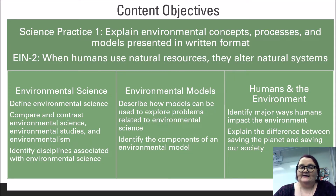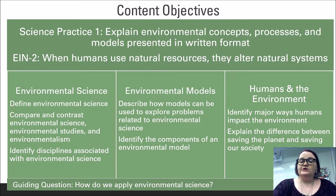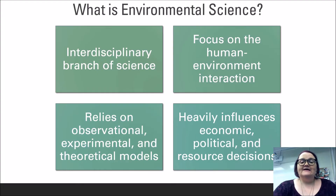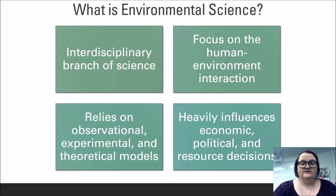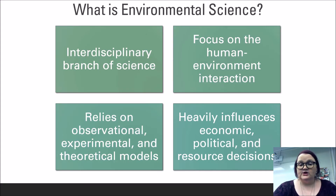You should also be able to identify components of an environmental model, identify major ways humans impact the environment, and explain the difference between saving the planet and saving our society — which leads us to the guiding question: how do we apply environmental science? Environmental science is, in simplest terms, the study of how human beings interact with and influence our world through natural and unnatural processes. It is one of the most prolific interdisciplinary branches of science, incorporating the work, theories, models, and practices of a variety of science and non-science disciplines. For example, economists often work with ecologists to understand the ways in which the natural world can perform services for human society.